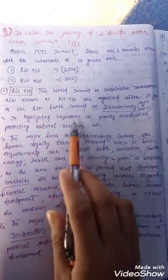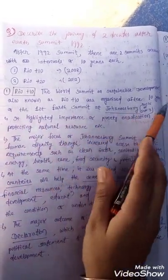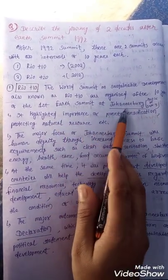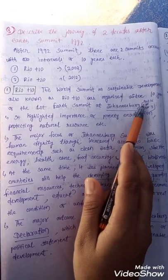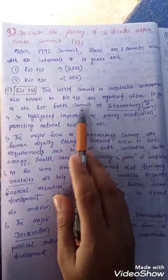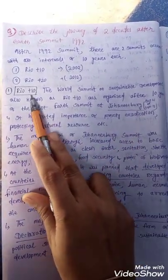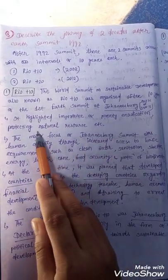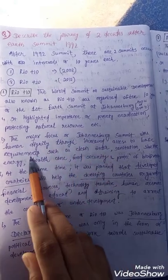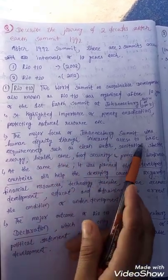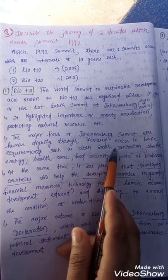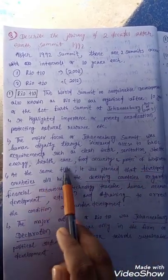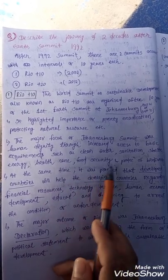Rio+10, also known as the World Summit on Sustainable Development, was organized 10 years after the first Earth Summit in Johannesburg from August 26 to September 4. It highlighted the importance of poverty eradication and protecting natural resources. The major focus of the Johannesburg Summit was human dignity through increased access to basic requirements like clean water, sanitation, shelter, energy, healthcare, food security, and protection of biodiversity.